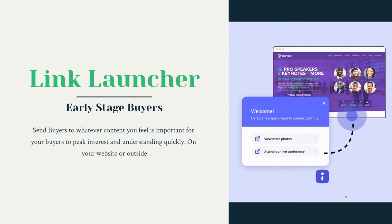One other thing we offer using link launcher: if you don't want to use our built-in live chat, we can help you trigger another live chat product you're already using. Right now we have three built-in integrations: Intercom, Help Crunch, and a product called Live Chat. If you're already using one of these, we can trigger them inside of our engagement panel using link launcher.